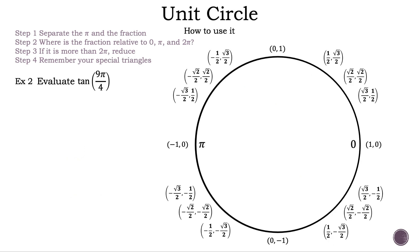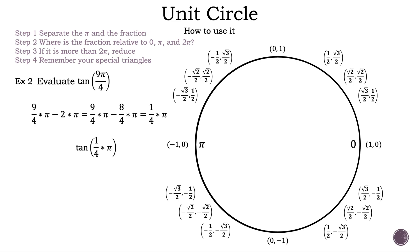Example 2: Evaluate tan of 9π/4. Let's rewrite it as tan of (9/4 × π). Since 9π/4 is more than 2π, we subtract 2π. Converting to a common denominator: 2π = 8/4 π, so 9/4 π − 8/4 π = 1/4 π. We can rewrite tan of 9π/4 as tan of (1/4 × π).